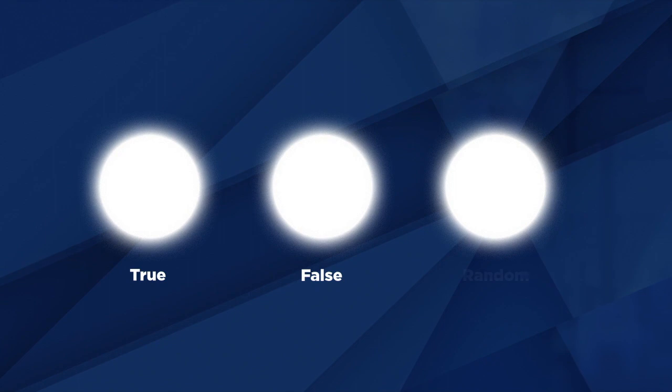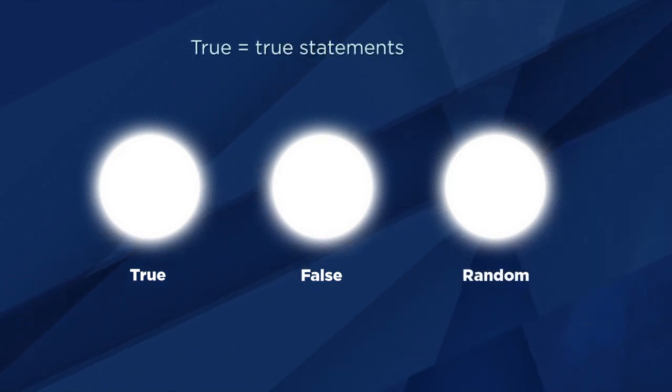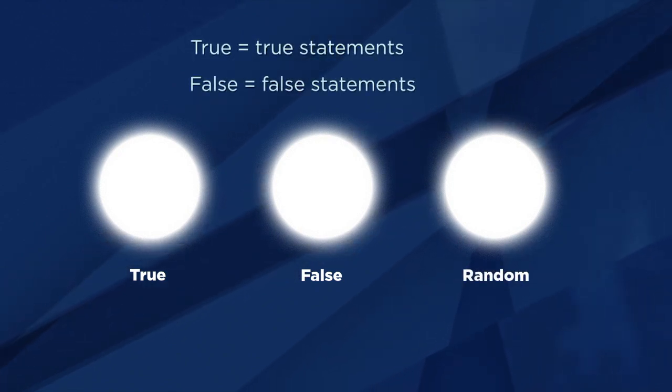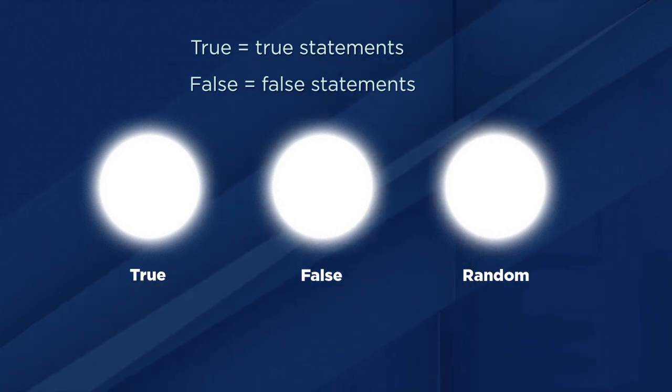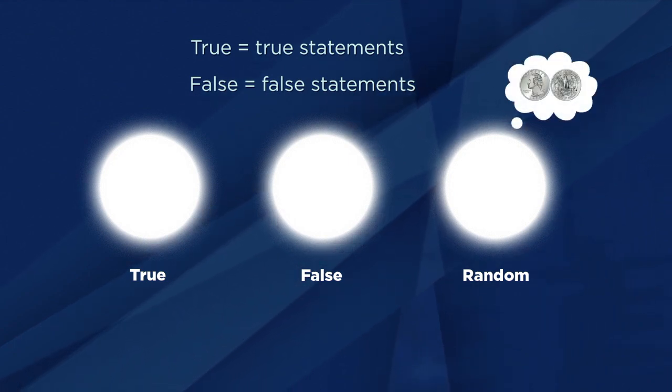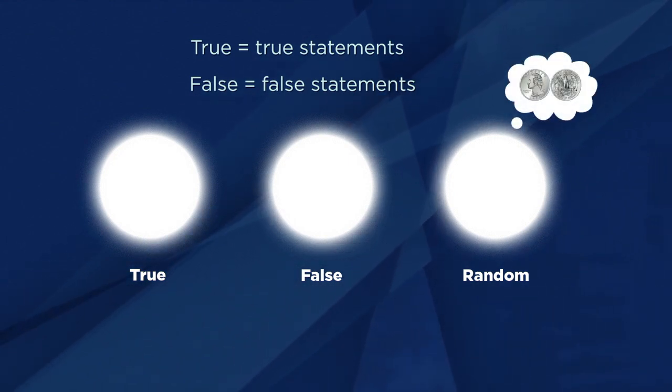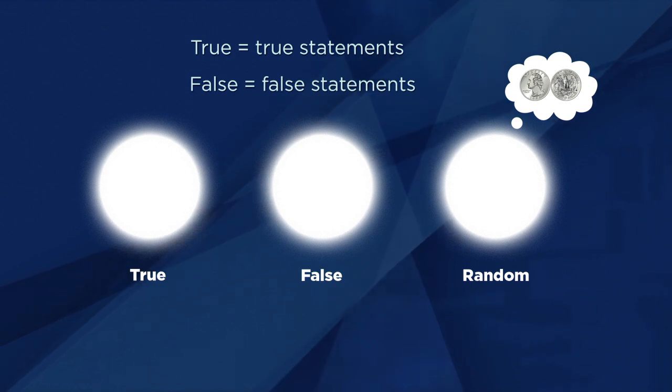The hardest logic puzzle ever was introduced by philosopher George Boolos in a paper published in 1996. The paper was called The Hardest Logic Puzzle Ever. The puzzle is this: we are to imagine three gods. The gods are named True, False, and Random. True only makes true statements, and False only makes false statements. But Random is a wild card — each time he's asked a question, he mentally flips a coin, and depending on the result, he decides whether to answer the way True would answer or the way False would answer.